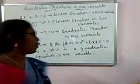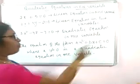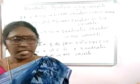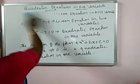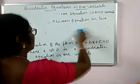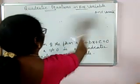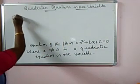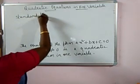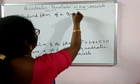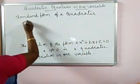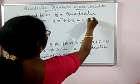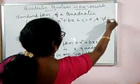That's why the equation of the form ax square plus bx plus c equal to 0, where a is not equal to 0, is said to be a quadratic equation in one variable. And this itself is the standard form of the quadratic equation. So, the standard form of the quadratic equation is ax square plus bx plus c is equal to 0, where a is not equal to 0.